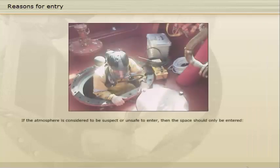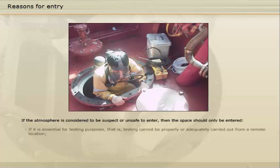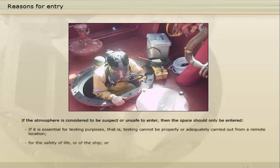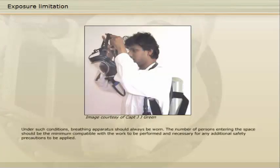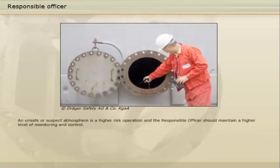If the atmosphere is considered to be suspect or unsafe to enter, then the space should only be entered if it is essential for testing purposes — that is, testing cannot be properly or adequately carried out from a remote location — for the safety of life or of the ship, or for the work of the ship under controlled conditions. Under such conditions, breathing apparatus should always be worn. The number of persons entering the space should be the minimum compatible with the work to be performed and necessary for any additional safety precautions to be applied. An unsafe or suspect atmosphere is a higher risk operation, and the responsible officer should maintain a higher level of monitoring and control.